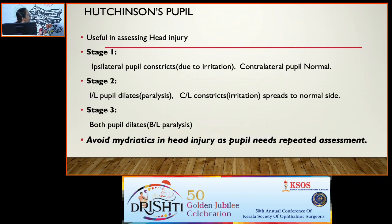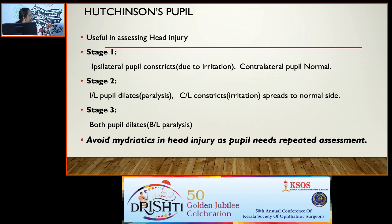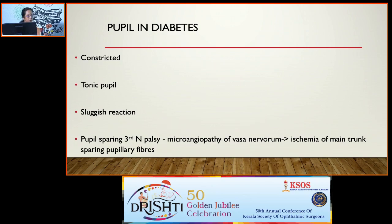In Horner's syndrome (oculosympathetic paresis), there is mild ptosis from weakness of Müller's muscle, slight elevation of the lower eyelid (upside-down ptosis), miosis from unopposed sphincter action, and anisocoria that is more in dim light. Pupillary light and near reflexes are normal. In congenital and long-standing cases, hypochromic heterochromia of the affected iris occurs. Lesions below the superior cervical ganglion cause reduced sweating on that side. Apraclonidine or cocaine confirms the diagnosis; 1% hydroxyamphetamine differentiates preganglionic from postganglionic lesions. Preganglionic Horner's can be a sign of lung malignancy.